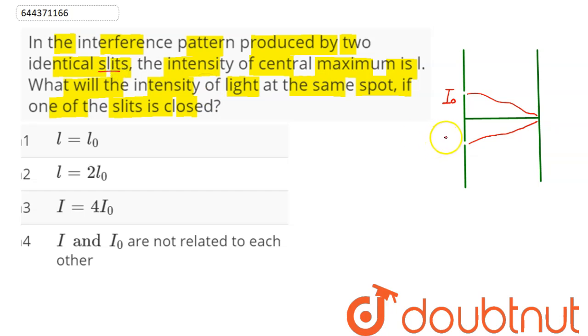The intensity at the central maxima is given as I = (√I₁ + √I₂)². Since I₁ and I₂ are both the same...